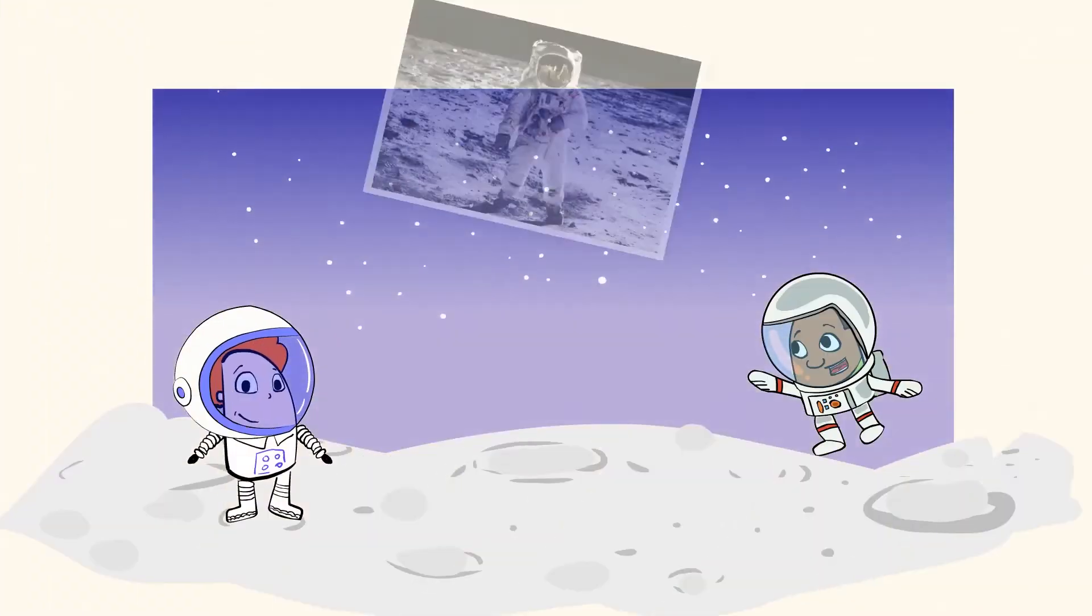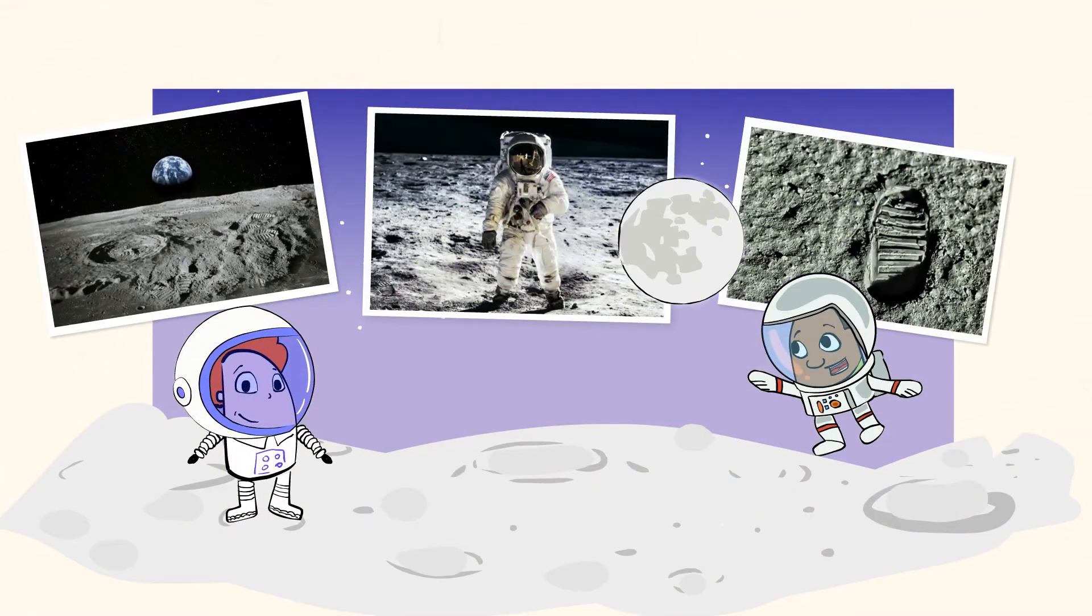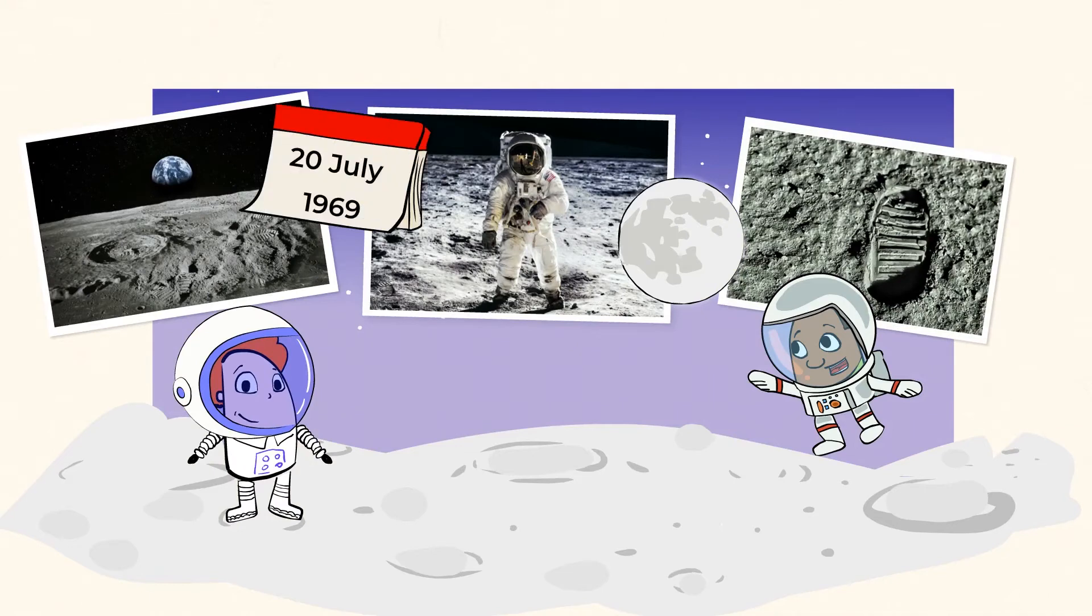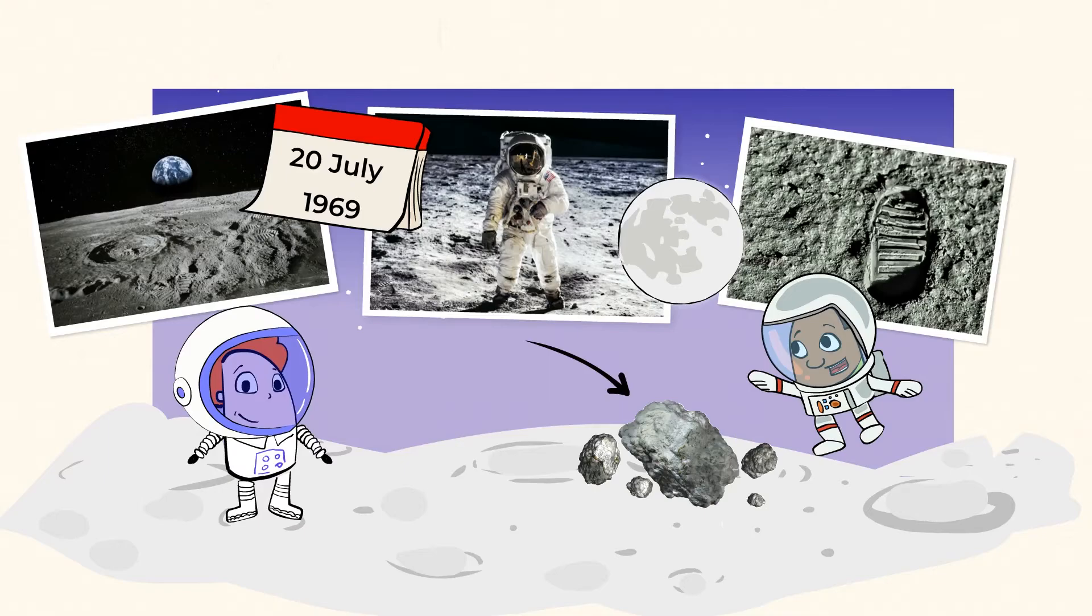We humans walked on the moon for the first time over 50 years ago, in 1969. That was an incredible time for humankind. The astronauts there were able to make many observations, and even brought back rocks to study.